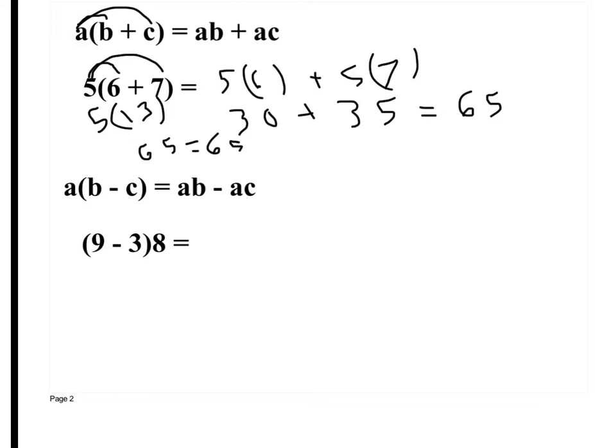Then you have this where it's subtraction. Nothing changes except the sign. a times b, keep the sign the same, and then a times c. If it's on the back, does it change anything? Like this is 9 minus 3 times 8. No, it doesn't change anything.